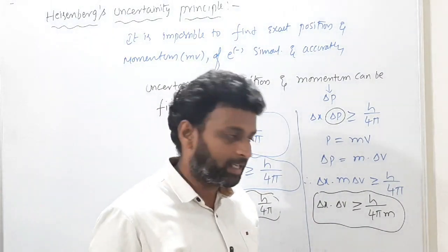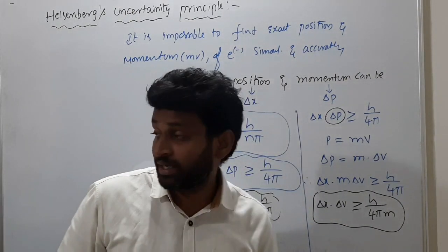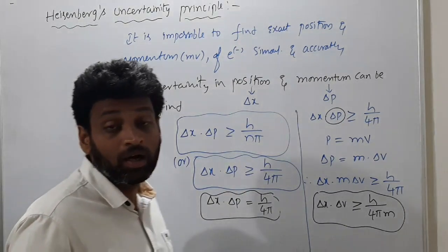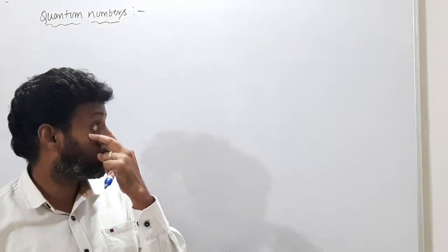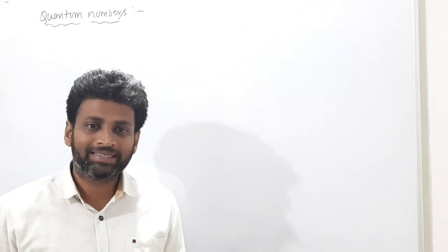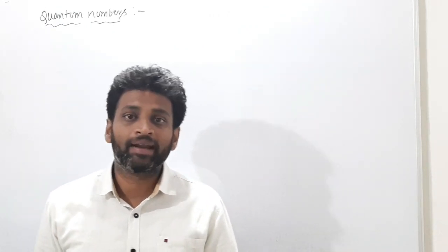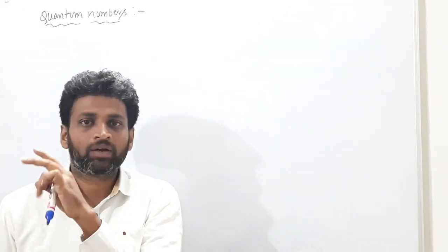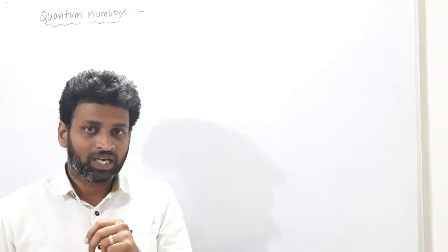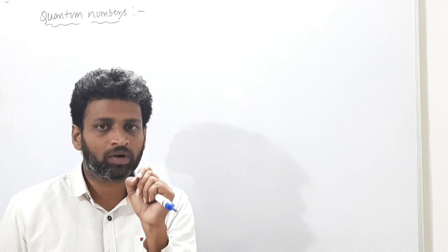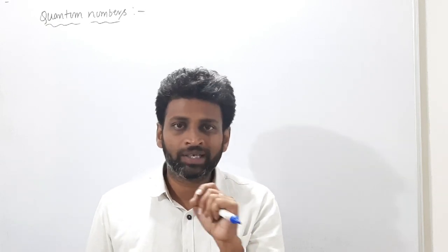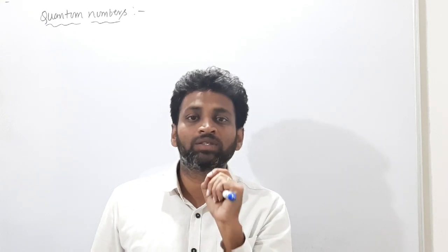This is about the Heisenberg uncertainty principle. Next we will discuss quantum numbers. Heisenberg said it is impossible to determine exact position and exact momentum of electrons simultaneously and accurately. If you study atomic structure from the beginning, our discussion is about electrons, protons, and neutrons — where electrons are present, where protons are present. But since in the nucleus protons and neutrons are fixed, our study focuses on electrons, because in chemical reactions electrons are the ones involved.